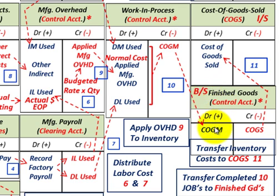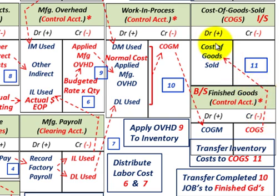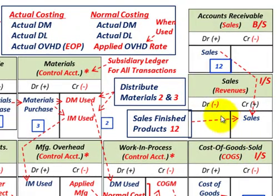Now step eleven: we transfer finished goods inventory to cost of goods sold when they are sold. We credit our finished goods control account for those inventories being transferred, and debit our cost of goods sold for that amount. This is where the costs move from the balance sheet onto the income statement.